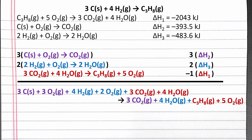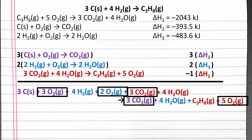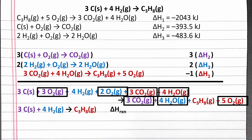Now we can cancel out anything that shows up as both a reactant and product. We have three moles plus two moles of oxygen gas as a reactant, which cancels out the five moles of oxygen gas as a product. We have three moles of carbon dioxide as a reactant and product, which cancel out. And we have four moles of water vapor as a reactant and product, which cancel out. All that's left is our overall reaction: three solid carbon plus four hydrogen gas produces propane gas.